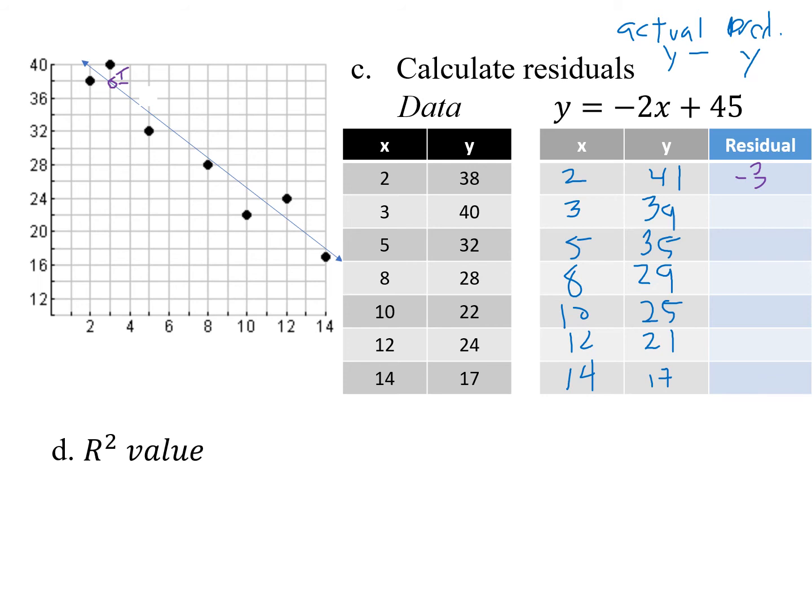For the next one, original is 40 minus predicted of 39. Well, that's a value of positive 1. And that makes sense. I see that the dot is above my line of fit. We'll do the same thing. 32 minus 35. 28 minus 29. 22 minus 25. 24 minus 21. And 17 minus 17. That makes sense because I can see that that line of fit goes directly through that last point. So my residuals are these values here. I took the actual data and subtracted my predicted y value.